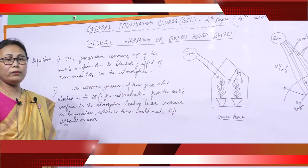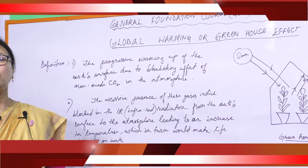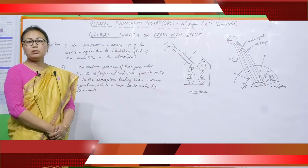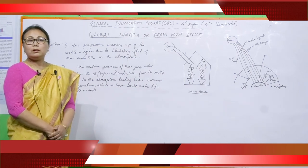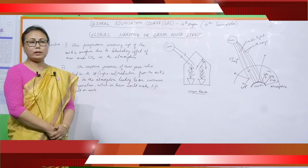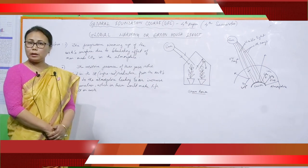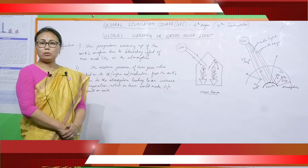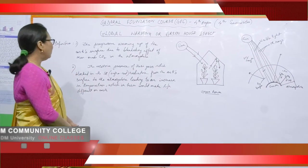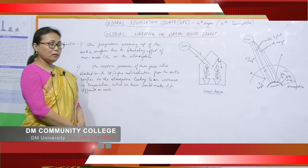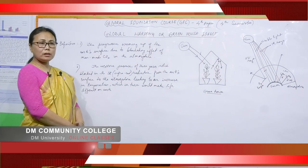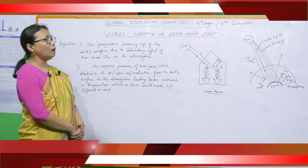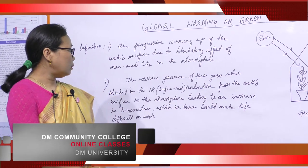Global warming or greenhouse effect is defined as the progressive warming up of the earth's surface due to the blanketing effect of man-made carbon dioxide. The greenhouse effect is mainly caused by carbon dioxide, but besides carbon dioxide, there are a few more gases which are responsible for global warming. The definition of greenhouse effect or global warming is extended to: the excessive presence of gases which block infrared radiation from the surface to the atmosphere, leading to an increase in temperature which in turn would make life difficult on earth.